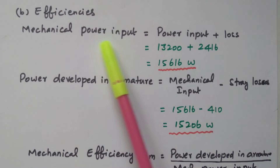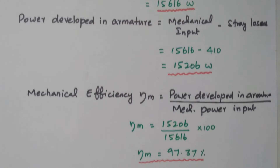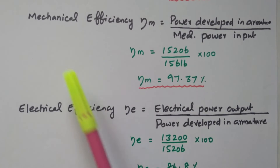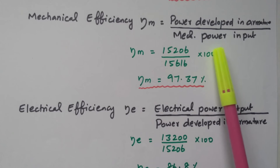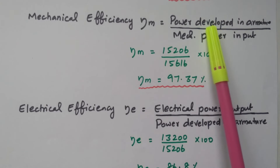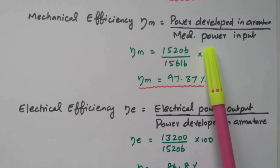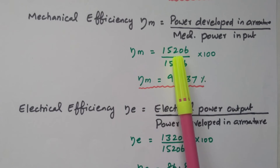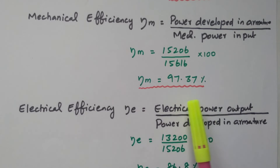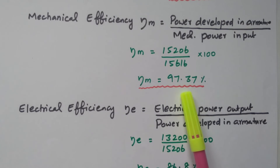Now we have the data: mechanical power input, total power input, and power developed in the armature. So we can calculate efficiencies one by one. Mechanical efficiency = power developed in armature / mechanical power input. The mechanical power input has stray losses; what remains is developed in the armature. So: 15,206 / 15,616 × 100 = 97.37%. The mechanical efficiency is 97.37%.